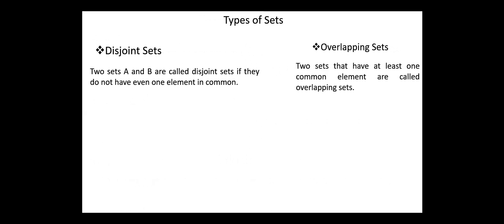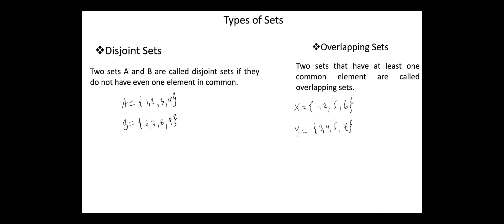Next, we have two types of sets: disjoint sets and overlapping sets. Two sets A and B are called disjoint sets if they do not have even one element in common. For example, A = {1, 2, 3, 4} and B = {6, 7, 8, 9} are disjoint sets, since they do not have any elements in common. Two sets that have at least one common element are called overlapping sets. For example, if X = {1, 2, 5, 6} and Y = {3, 4, 5, 7}, then these sets are overlapping sets, since the element 5 is contained in both sets.